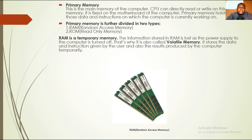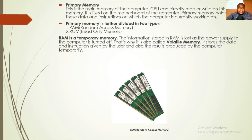Primary memory is the main memory of the computer. The CPU can directly read or write on this memory. It is fixed on the motherboard of the computer. Primary memory holds only those data and instructions on which the computer is currently working.